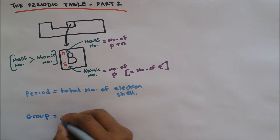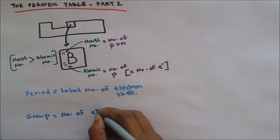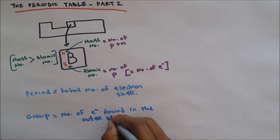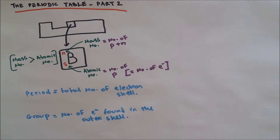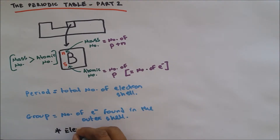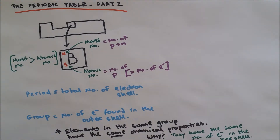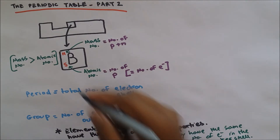The group tells us the number of electrons found in the outer shell. So for example, if we have two electrons in the outer shell, the element would be found in group two. An important thing to note is that elements in the same group will have similar chemical properties, because they have the same number of electrons in the outer shell.